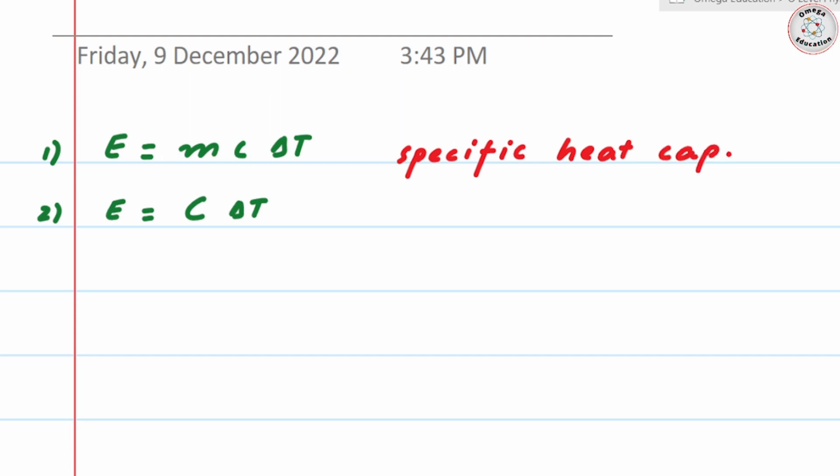Not only you have to use it to find specific heat capacity, matter of fact, out of these four things, if two things are given, you can always find, or three things are given, you can always find the fourth one. The second one is for heat capacity.